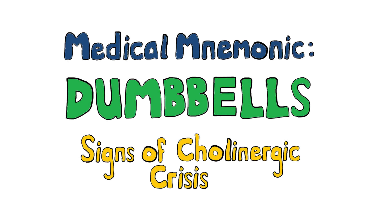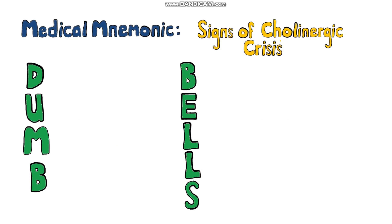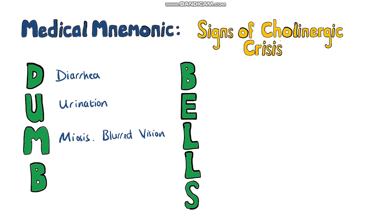With the medical mnemonic DUMBBELLS, you'll be able to remember the features of a cholinergic crisis, meaning an excessive cholinergic activation in the body. The D stands for diarrhea and U is for urination. M will remind you of miosis, which is the constriction of the pupils, and you can also end up having vision problems in a cholinergic crisis, which we'll include here.